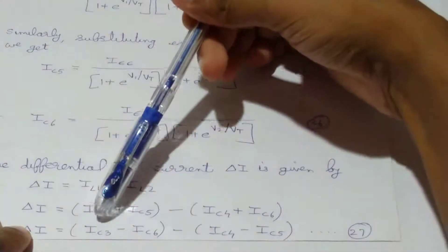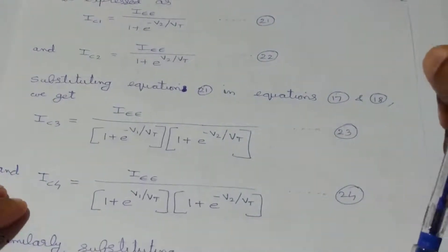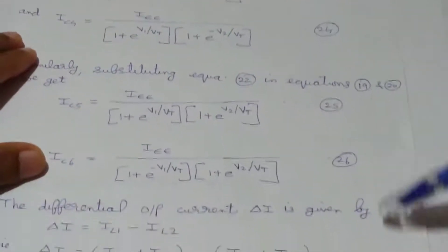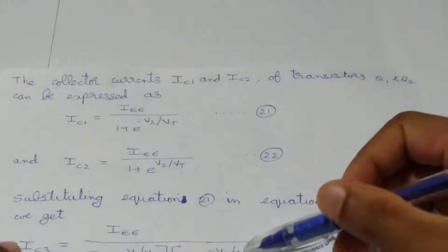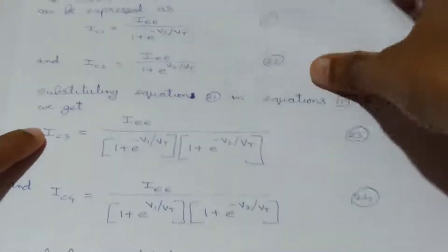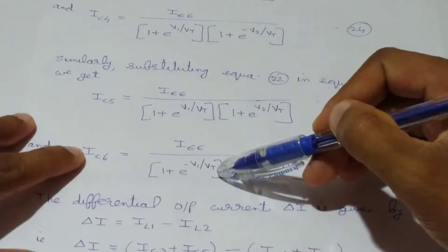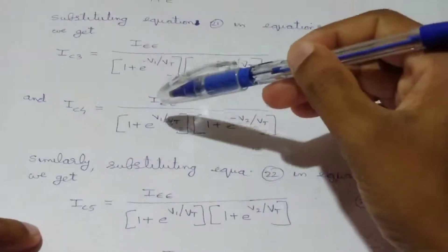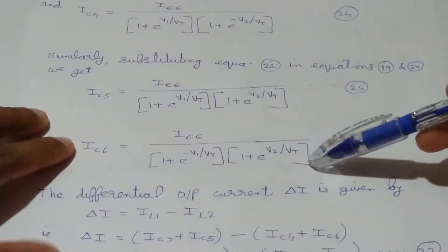We now substitute equations 23 through 26 into equation 27. For the first term IC3 minus IC6, the factor IEE divided by (1 + e raised to minus V1 over Vt) is common, so we factor it out to get IEE over (1 + e to minus V1 over Vt) times [1 over (1 + e to minus V2 over Vt) minus 1 over (1 + e to V2 over Vt)].